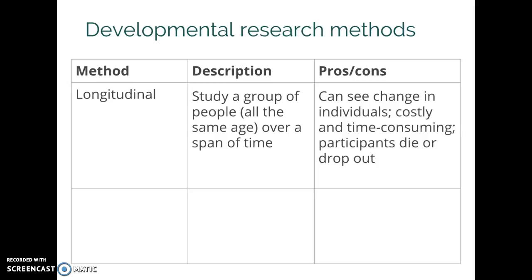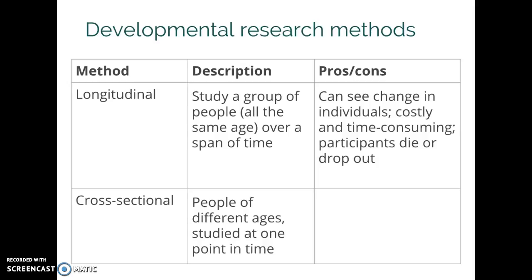So very often what researchers will do instead is what's called a cross-sectional study. In a cross-sectional study you go out at one point in time and you compare groups of people of different ages. So you might find a group of 10 year olds, a group of 20 year olds, and a group of 30 year olds. The advantage is everything you don't have with longitudinal research — it's cheaper, it's quicker, and you don't have to worry about people dying or dropping out.